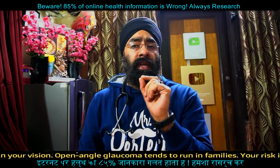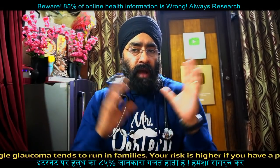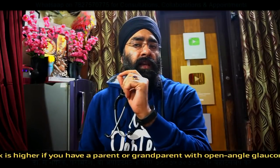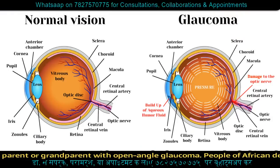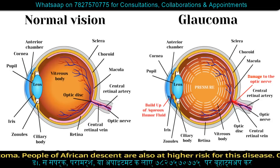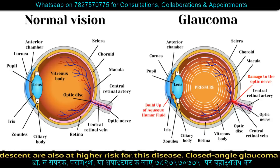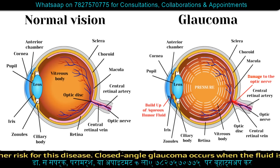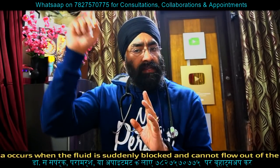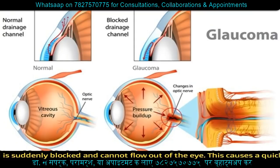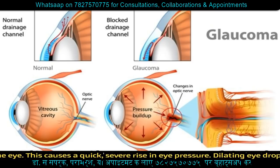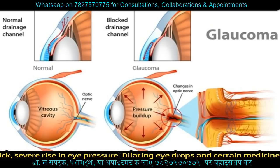The cornea is the clear covering at the front of the eye. There is the pupil, the iris, and the angle — the drainage angle between the iris and the cornea. This is a simple system: anything that slows down the drainage of aqueous humor will increase the pressure inside the eye — very simple.